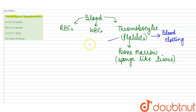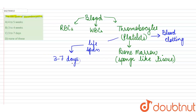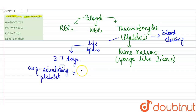Now, if we talk about the lifespan of thrombocytes, it is around 3 to 7 days. However, an average circulating platelet remains alive for 8 to 9 days. After around 7 days, thrombocytes are destroyed by the spleen and liver of our body.